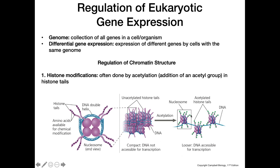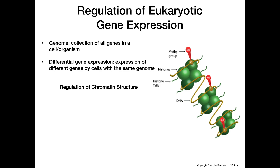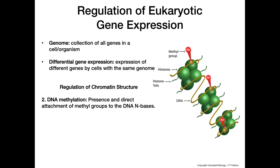So acetylation is typically done when we want to loosen the DNA structure to allow transcription to take place on those genes. Another form of regulation of gene expression is DNA methylation, which is the presence and direct attachment of methyl groups to the DNA nitrogenous bases — specifically, they're typically added to cytosines.